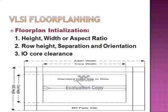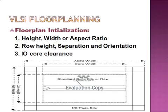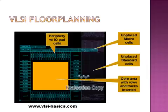The second step in floor planning installation is to set parameters for row height, orientation, and separation. The row height is equal to the standard cell height. The third step is to set IO core clearances. IO core clearance is the space from the core boundary to the design boundary — that is, the space between the core boundary and the boundary occupied by I/Os or IO pins.